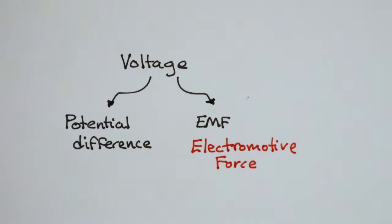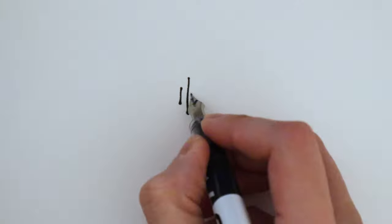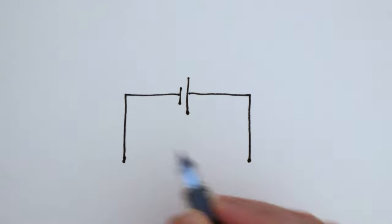So what is the difference between EMF and potential difference? Here's a simple circuit with a cell and a light bulb.